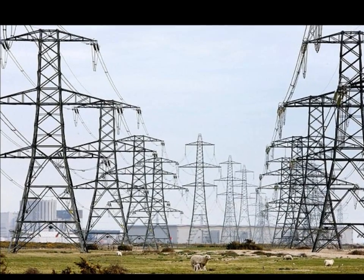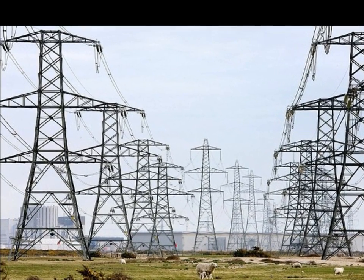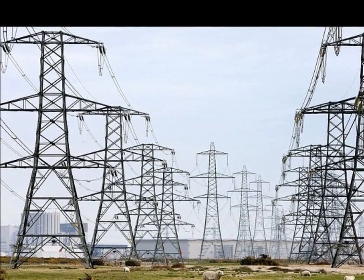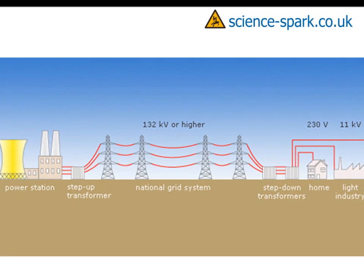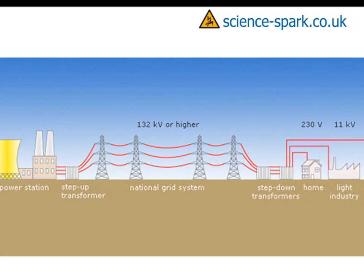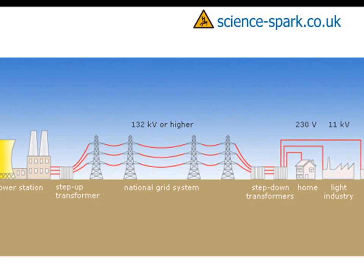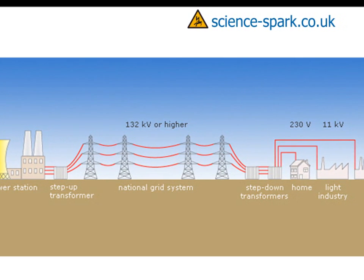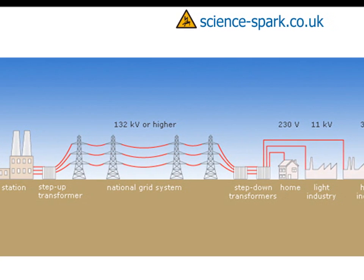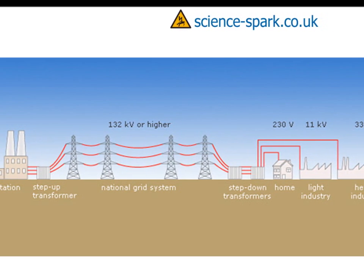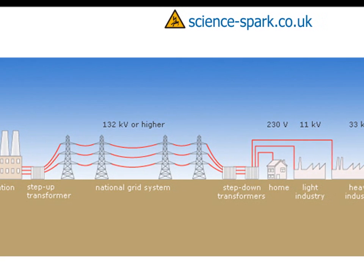The National Grid is a system that takes electricity from power stations to our homes. In this video, we'll be looking at why we use transformers in this system. In this diagram, you can see that electricity comes from the power station and goes through a step-up transformer up to 132,000 volts or higher, then through a step-down transformer reducing the voltage to about 230 volts for home use. I'm going to show you a demonstration you can do in the classroom.